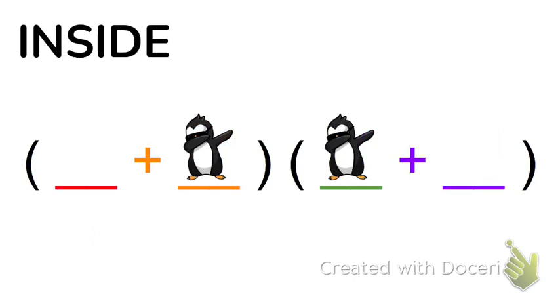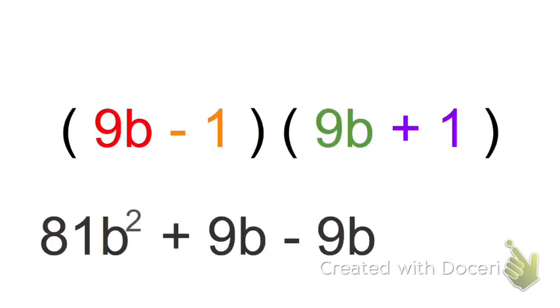The I stands for inside. So we're going to multiply the two terms inside both sets of parentheses. So in this case, it's the negative 1 and the 9b. Negative 1 times 9b is negative 9b.